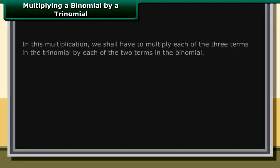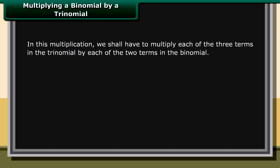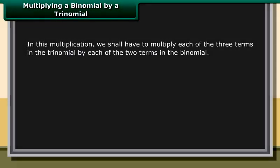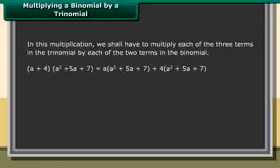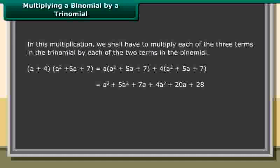Multiplying a binomial by a trinomial: In this multiplication, we multiply each of the three terms in the trinomial by each of the two terms in the binomial. (a + 4)(a² + 5a + 7) equals a(a² + 5a + 7) plus 4(a² + 5a + 7), which equals a³ + 5a² + 7a + 4a² + 20a + 28, which equals a³ + 9a² + 27a + 28.